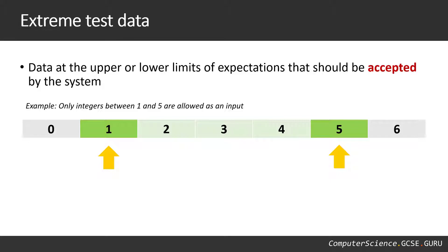The next category is extreme test data — data at the upper and lower limits of expectations that should also be accepted by the system. With the same example of a system accepting integers between one and five, the extreme values would be one and five. So one and five would be the values I would test under the extreme test data category.